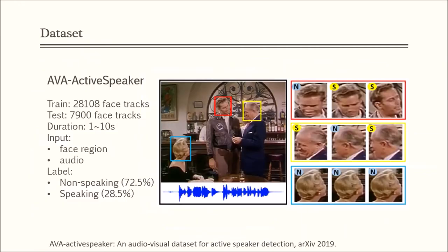We use AVA Active Speaker dataset to evaluate our system, including 28,108 face tracks as training data and 7,900 face tracks as test data. Each face track ranges from 1 second to 10 seconds. As the right image shows, each face track includes the face region sequence and the audio signal. Each frame will be labeled as non-speaking or speaking. There are 72.5% non-speaking face frames in the dataset.